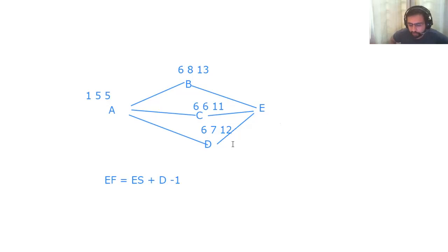Now in order for E to start, all three activities B, C, D has to finish. C will finish on the 11th day, D will finish on the 12th day, and B will finish on the 13th day. So E can only start when B, C, D are finished. So E will be starting on 14th day. So we will have its early start as 14. Duration of E was five. So 14 plus five, 19 minus one, 18.